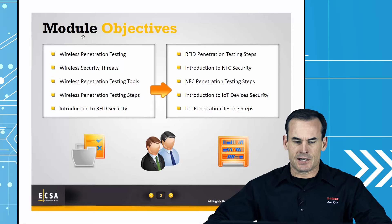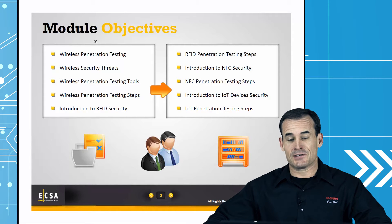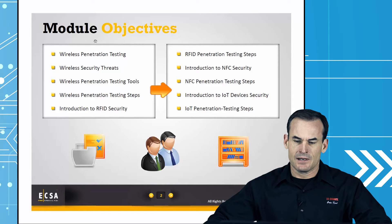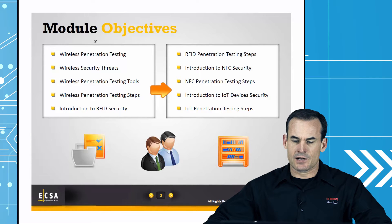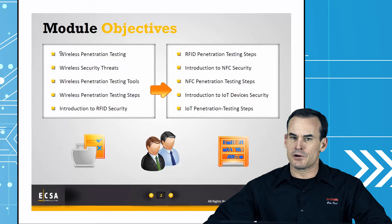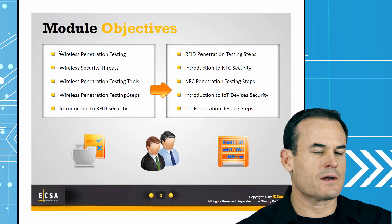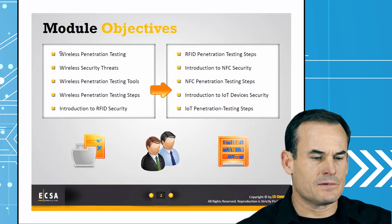Our module objectives include: wireless penetration testing, wireless security threats, wireless penetration testing tools, wireless penetration testing steps, introduction to RFID security, RFID penetration testing steps, introduction to NFC or near-field communication security, NFC penetration testing steps, introduction to IoT or Internet of Things devices security, and IoT penetration testing steps. We're not going to get into the specifics of tools for RFID, NFC, or IoT — we'll liken those to other connected devices and give you a starting methodology and initial framework.